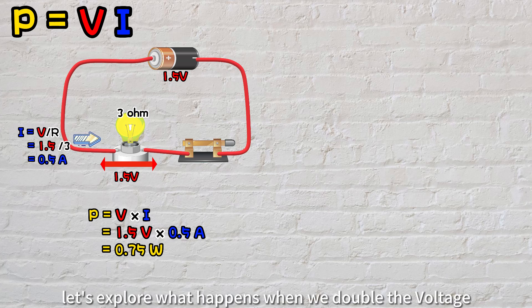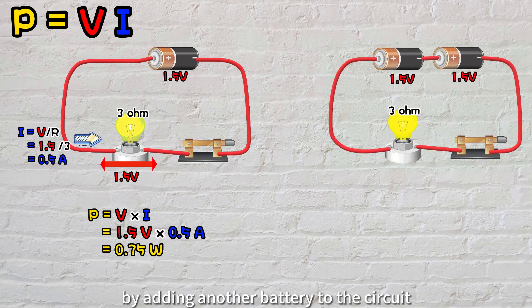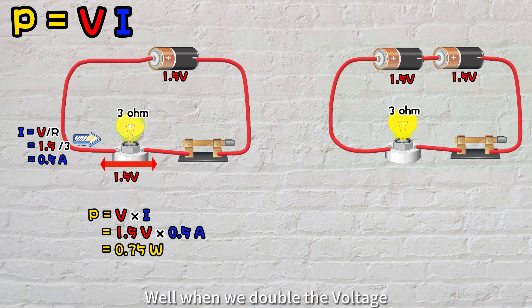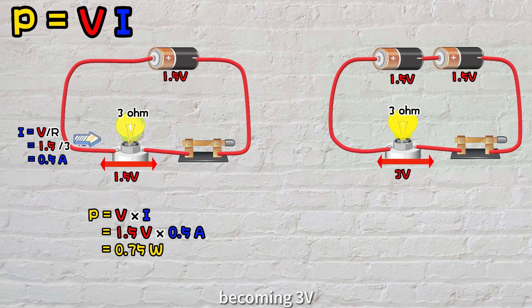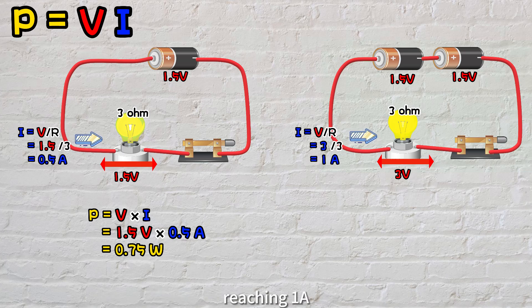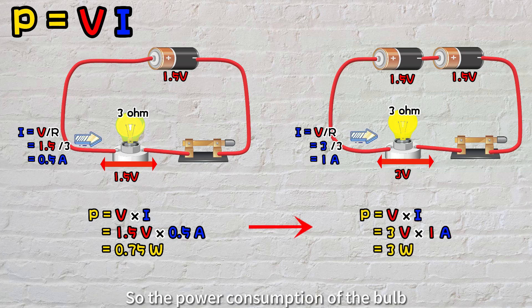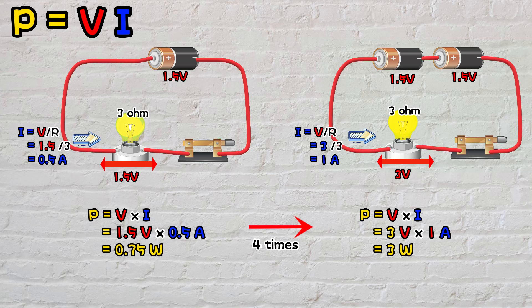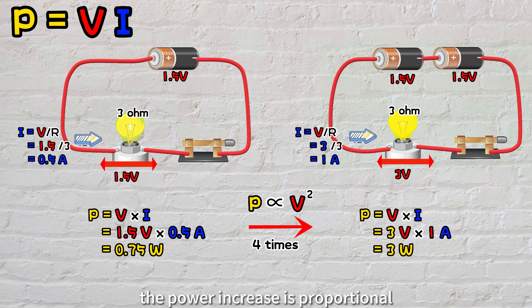Now let's explore what happens when we double the voltage by adding another battery to the circuit. Do you think the power consumption will double as well? The answer is no. When we double the voltage, the voltage across the light bulb also doubles, becoming 3 volts. As a result, the current flowing through the bulb also doubles, reaching 1 amp. So the power consumption of the bulb actually increased significantly by 4 times to 3 watts. This makes the bulb appear brighter. The power increase is proportional to the square of how many times the voltage is increased.